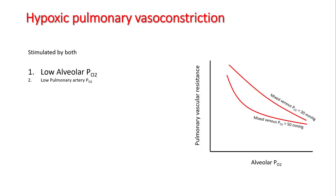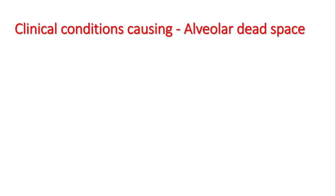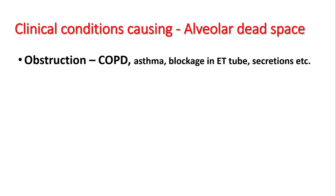Hypoxic pulmonary vasoconstriction is stimulated by low alveolar pO2 and low pulmonary artery pO2. Inflammation usually causes more shunting rather than dead space, though areas of high VQ can exist in patients with inflammation as well. Clinical conditions causing alveolar dead space include obstructive diseases like COPD and asthma, blockages in the endotracheal tube or with secretions, and alveolar destruction — for example, the bullae seen in COPD are dead spaces.